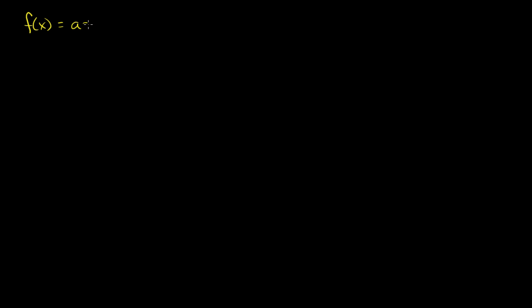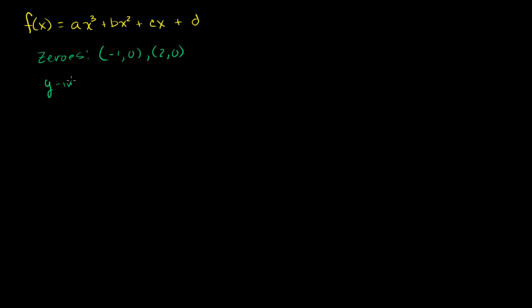They give us a function f of x. They say it's a third degree polynomial of the form ax³ + bx² + cx + d. They tell us a couple of the zeros of this polynomial — zeros at the points (-1, 0) and (2, 0). They also tell us that we have a y-intercept at the point (0, -2). And what they ask us is: what is a + b + c + d? So let's see if we can make some headway on this.